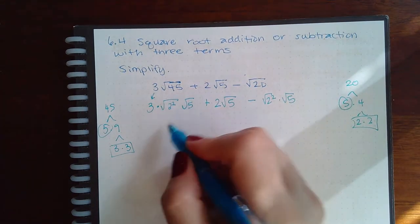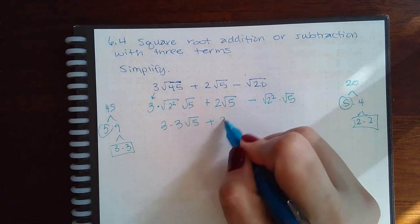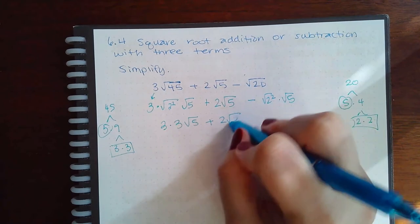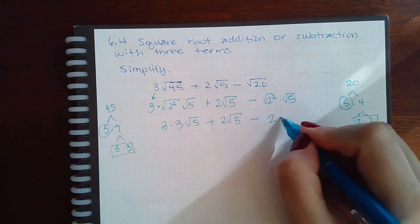So these are going to cancel. I'm going to have 3 times 3 with the square root of 5. This is still just 2 square root of 5. And then the last term will be minus just a 2 square root of 5.